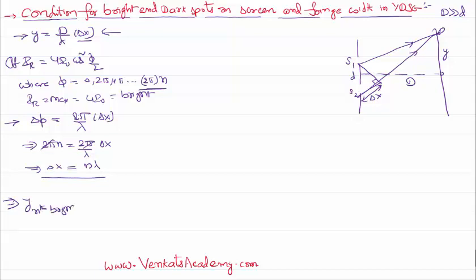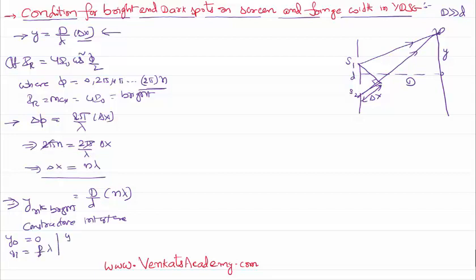Substituting this condition into our equation, we can write: y of the nth bright spot is equal to (capital D / small d) · nλ. So at all locations where n = 0, 1, 2, 3 onwards, we get a bright spot — constructive interference. The 0th bright spot is at y = 0, the 1st bright spot is at y = Dλ/d, and the 2nd bright spot is at y = 2Dλ/d, and so on.